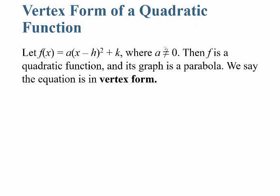So a, h, and k are all going to get replaced with numbers — the only variable is x. This is where a doesn't equal zero. Then if you're in this form, the function f is a quadratic function and its graph is a parabola, which is going to look like the letter U. We say this equation is in vertex form.